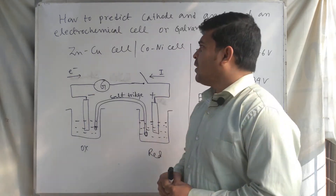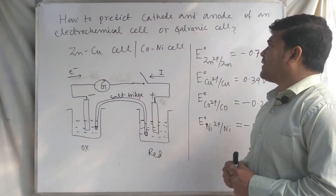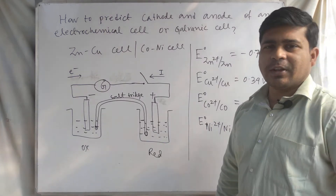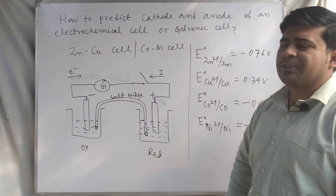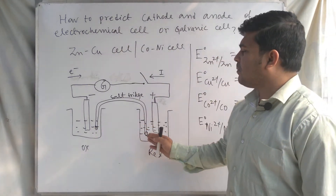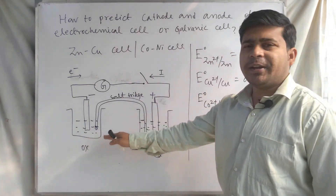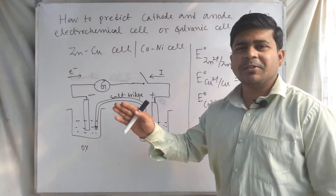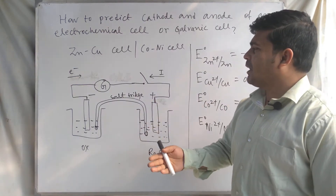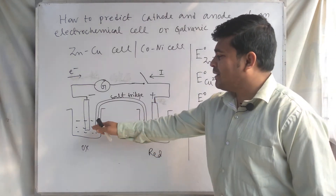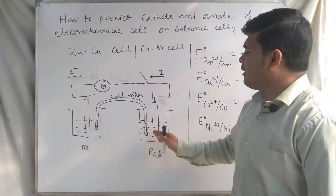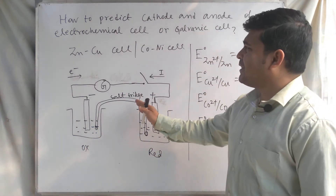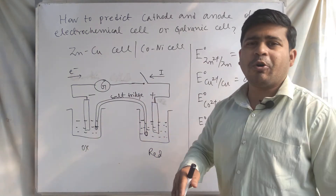Let us talk about this topic: how to predict cathode and anode of an electrochemical cell or galvanic cell. In a galvanic cell, two separate vessels are present — one on the left-hand side and another on the right-hand side. In each of these two separate vessels, one electrode is present.